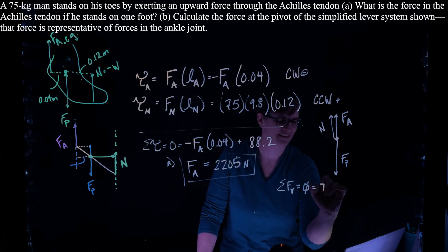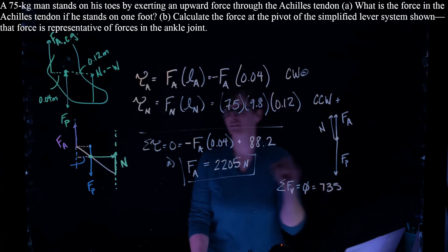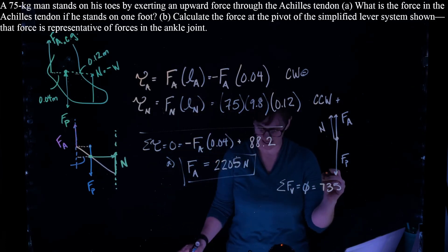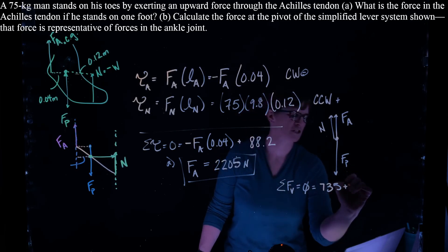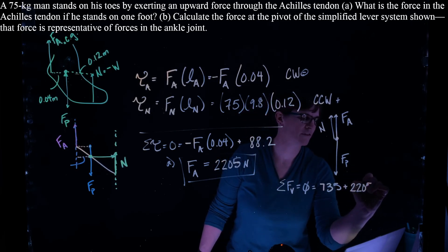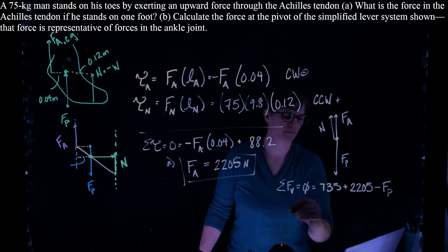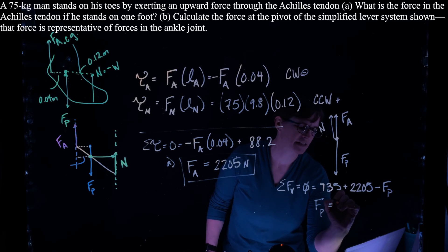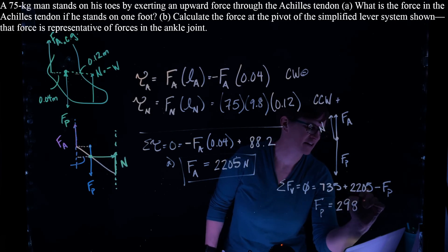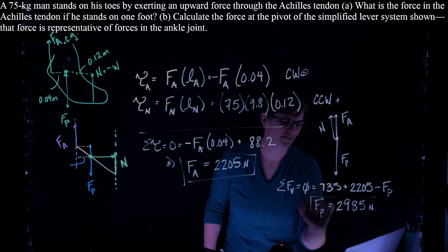Our normal force is 735. So 75 times 9.8 plus our Achilles force, which is 2205 minus the force at that pivot or the force on the ankle. And we can solve that to be 2,985 newtons.